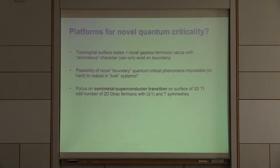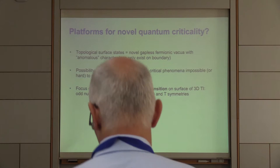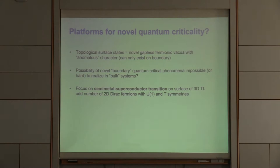The take I would like to have on these systems is to view them as platforms for possibly new types of quantum criticality. We know that there's something anomalous about the surface states: in the presence of the symmetries that protect the topological phase, these states can only exist on the boundary of a higher-dimensional system, and not in a lattice model of the same dimensionality.